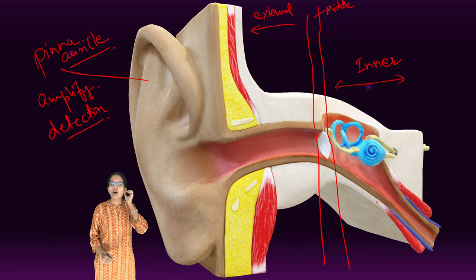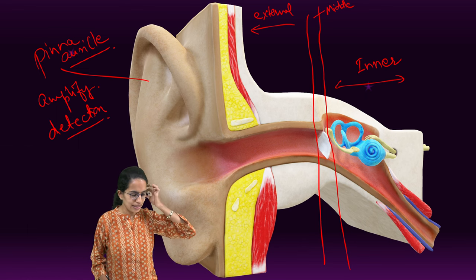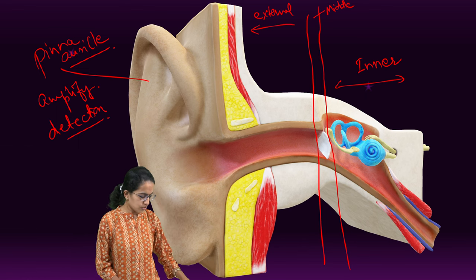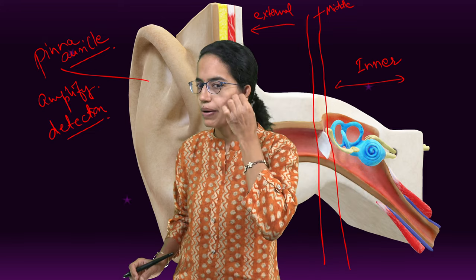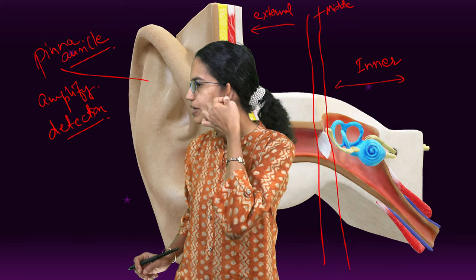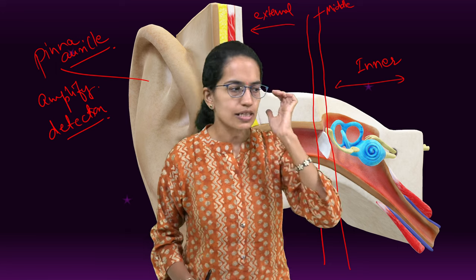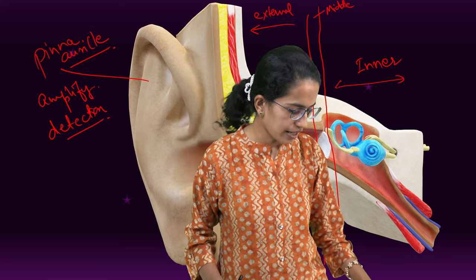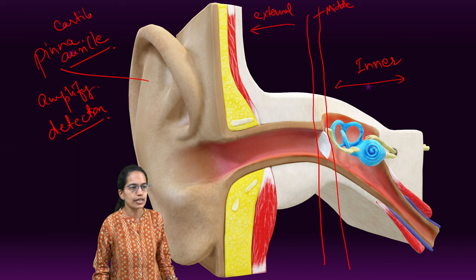Now, this pinna does not have any bone. That means I can bend it in any form. Let me zoom in — you can see that when I'm bending it, this section does not have any bone. That means this pinna is made up of cartilage.